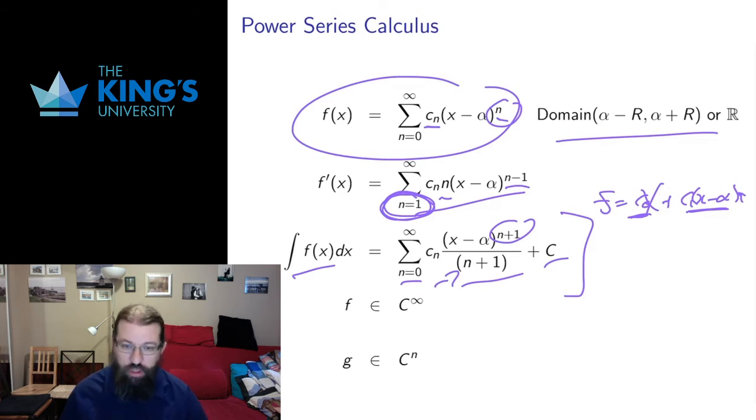Some notation here. These properties mean that I can take as many derivatives and as many integrals as I want. A function where I can take as many derivatives as I want is called a C∞ function. This comes from a notation Cⁿ which refers to the number of continuous derivatives a function has. So this is just useful notation to know about.